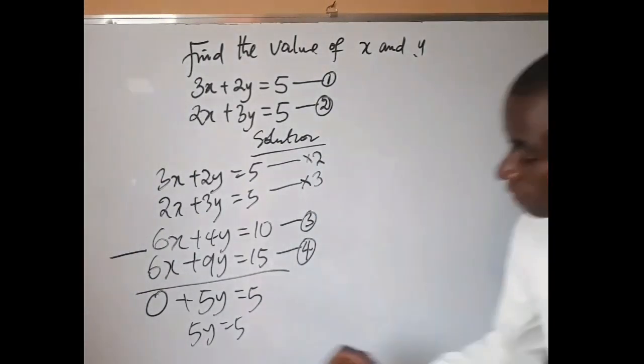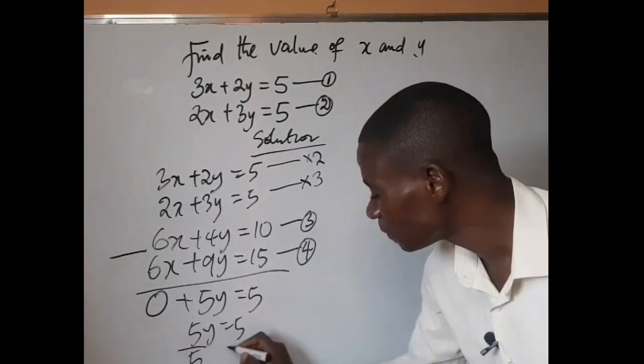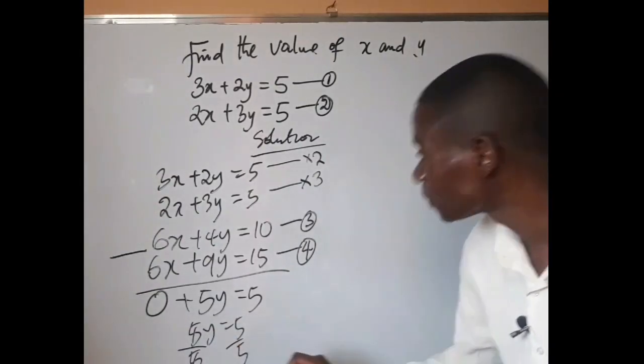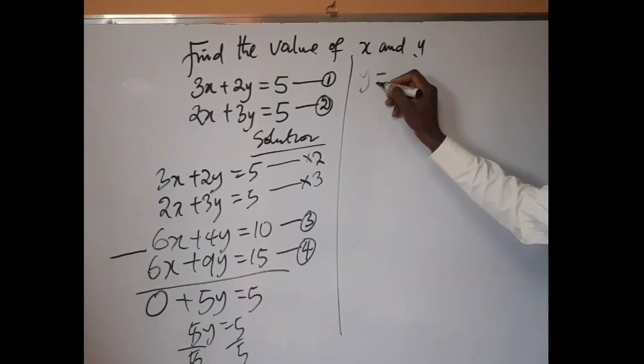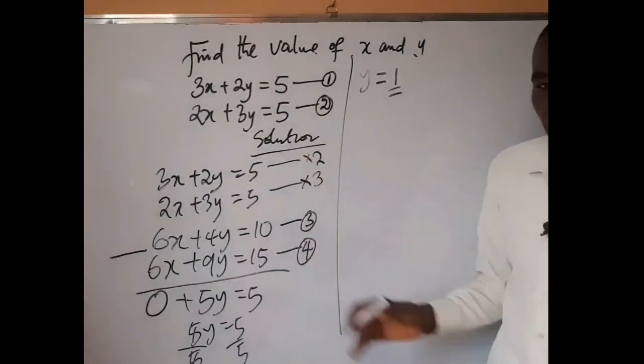So from here we are having 5y equals 5. So we can divide through by 5. 5 will cancel 5. Hence we can now say that our y is equal to 1.